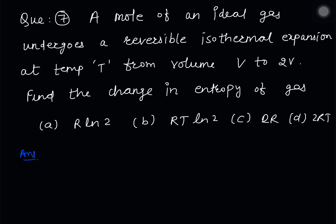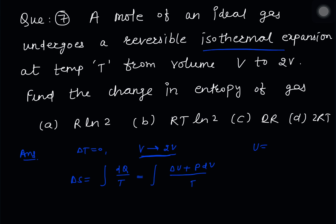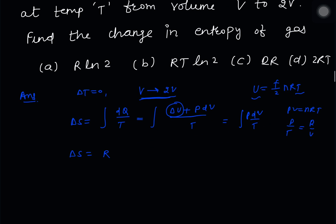In this question there is an isothermal expansion, so ΔT = 0, and the volume goes from V to 2V. For change in entropy, using the first law of thermodynamics: ΔS = ∫(p dV/T). For an ideal gas with internal energy (f/2)nRT, since ΔT = 0, ΔU = 0. Using pV = nRT for one mole, p/T = R/V. So ΔS = ∫R dV/V = R ln(V_final/V_initial) = R ln 2.